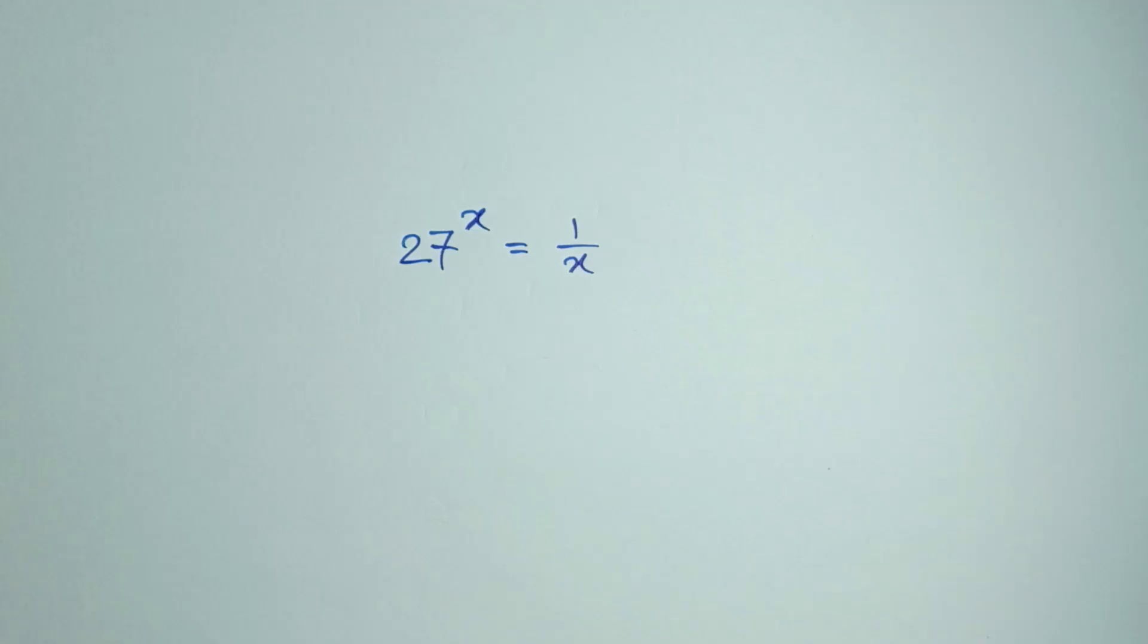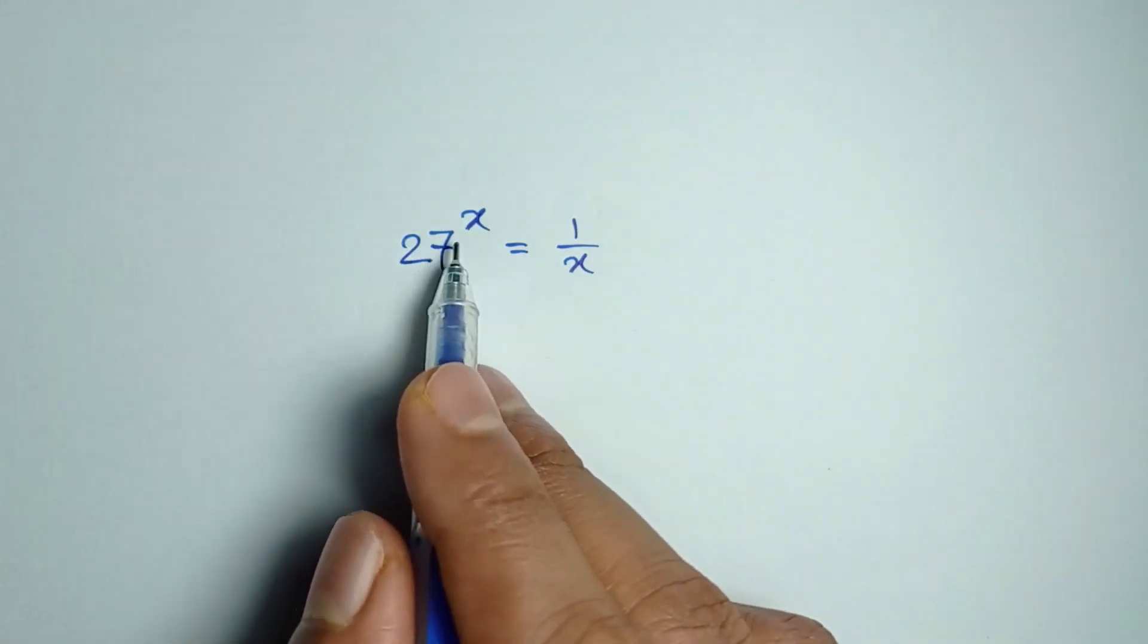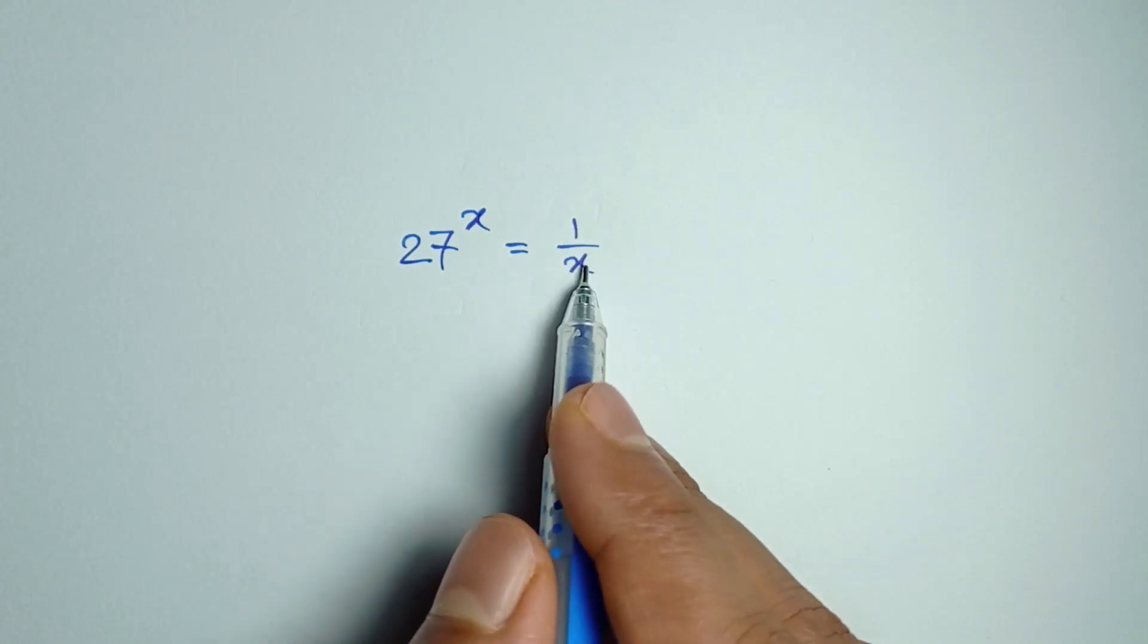Hi everyone, we have to solve 27 to the power x is equal to 1 by x.